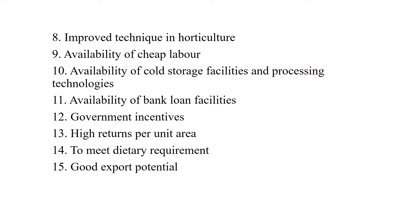Availability of cold storage and processing technology is also important. During the peak period of a particular crop, there is a glut in the market and prices are very low. This can be solved by storing fruits in cold storage and processing them into value-added products such as jam, jelly, juice, syrup, powder, pickle, preserve, and vegetable and fruit flakes, providing good scope for setting up agro-based industries.